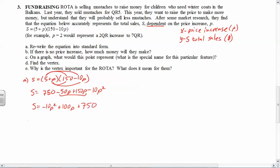Letter B: if there is no price increase, how much money will they make? So if P is 0, we're going to go S equals negative 10 times 0 squared plus 100 times 0 plus 750. And obviously that'll be 0 plus 0 plus 750 equals 750. So 750 dollars is what they would make if they did not increase the price.